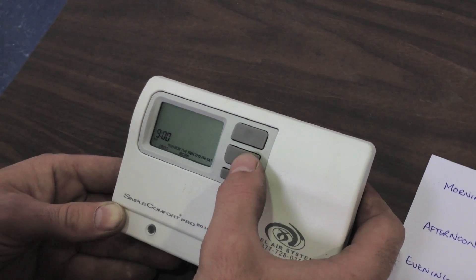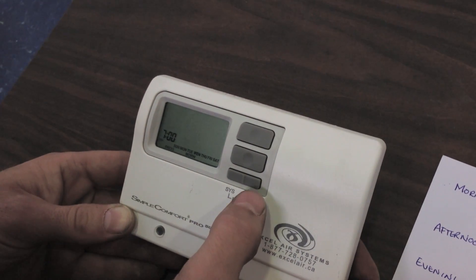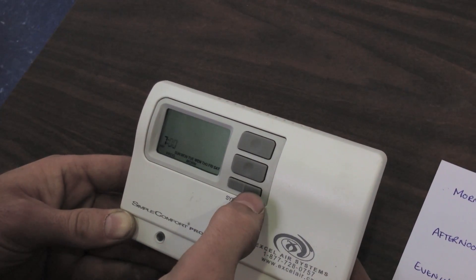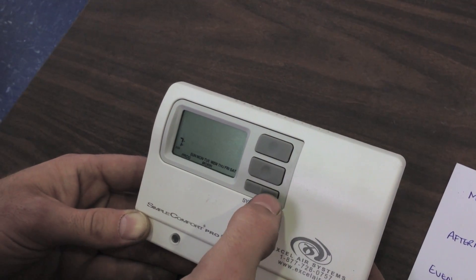So we're going to go down to 7. And we want to double-check that it does say a.m. Push our fan button. And our minutes are displayed. We're set for 7 a.m. We don't need to adjust that. So we're going to hit fan again.